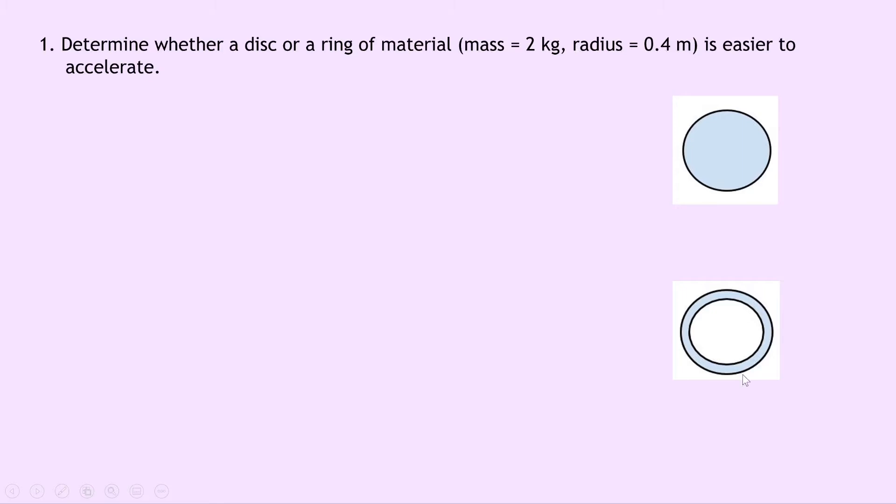But the idea here is that the mass is going to be distributed differently. So in the case of the disc, the mass is going to be spread evenly over the disc whereas for the ring all of its mass has to be distributed around the edge like this. But in both cases the axis of rotation will be in the center.